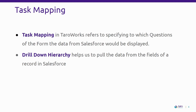Task mapping, on the other hand, is when you specify which questions on the form will display data from the fields in records in Salesforce, after you've set up a drill-down hierarchy to pull data from Salesforce so that that data can be mapped on the form. By using task mapping, we are basically passing data that already sits in Salesforce and you want it to be visible in the forms. One reason is if you want to reference some unique IDs — those IDs are in Salesforce so you want to have them on your form. You may also want to refer to current values in Salesforce before doing an update.